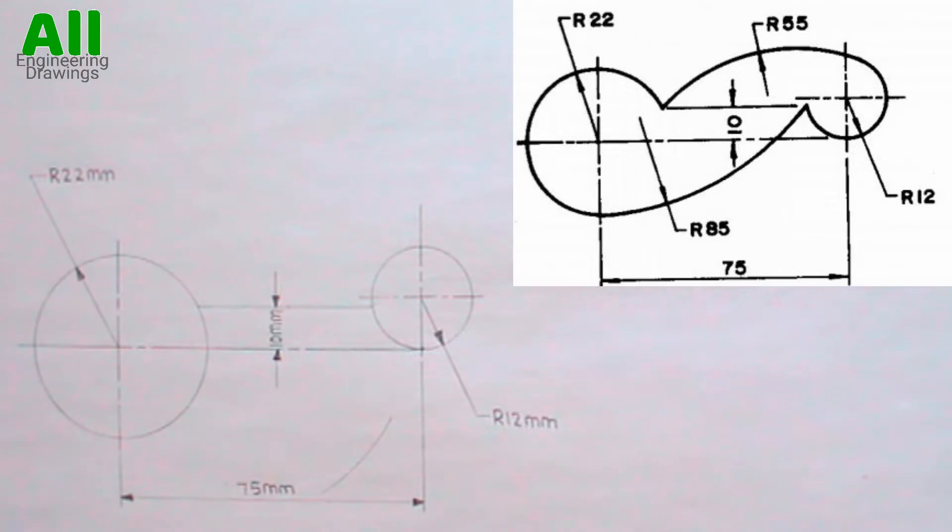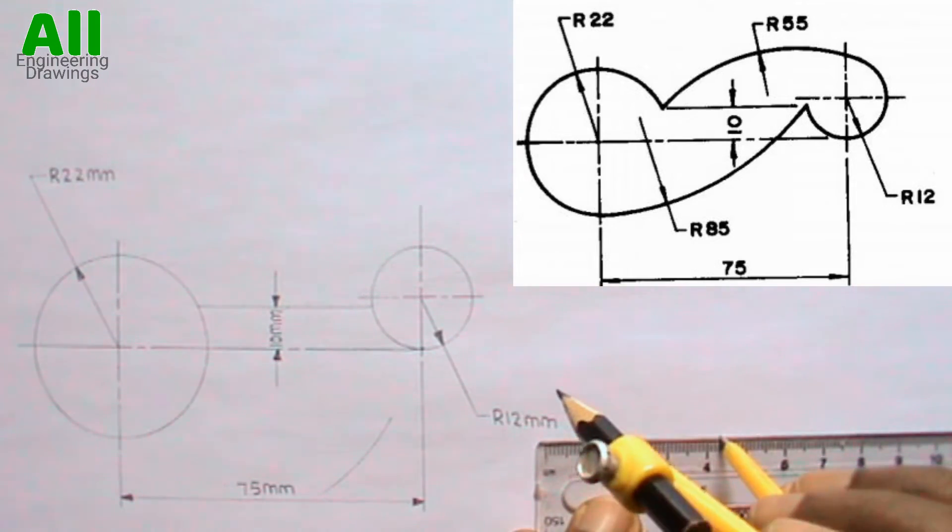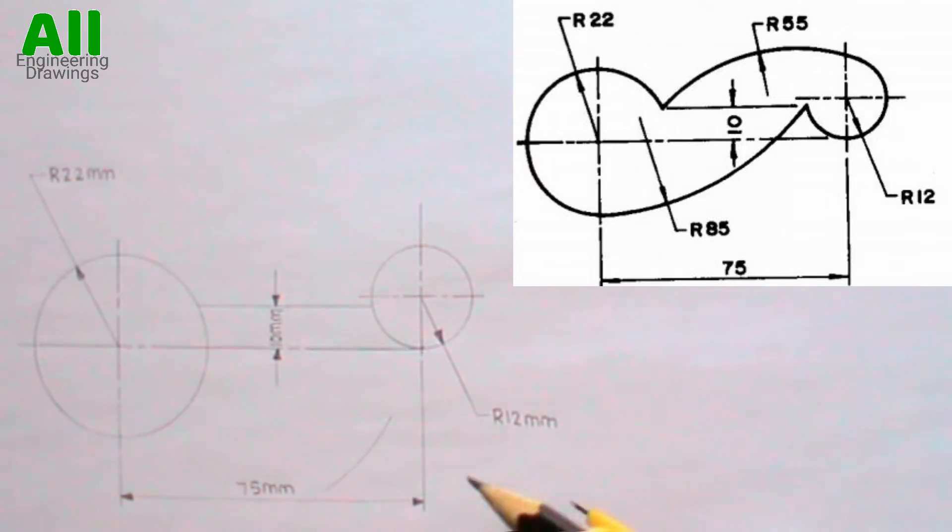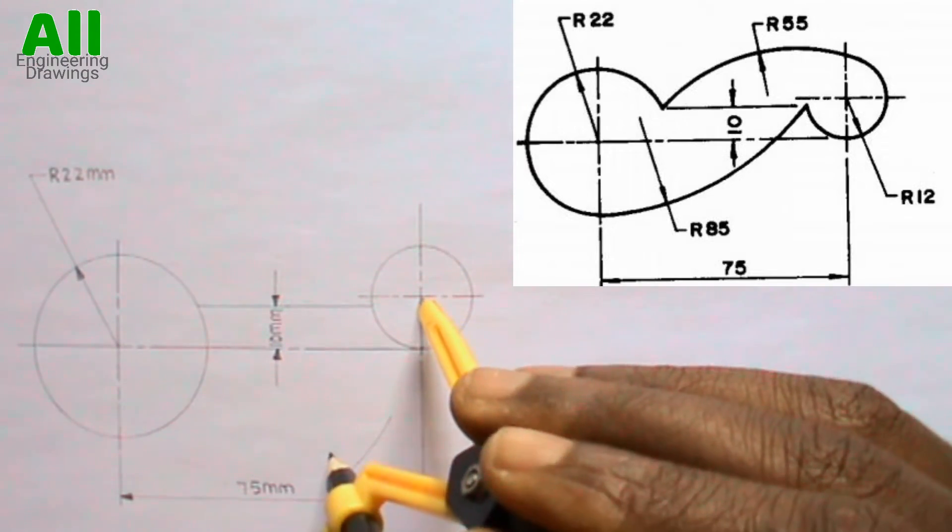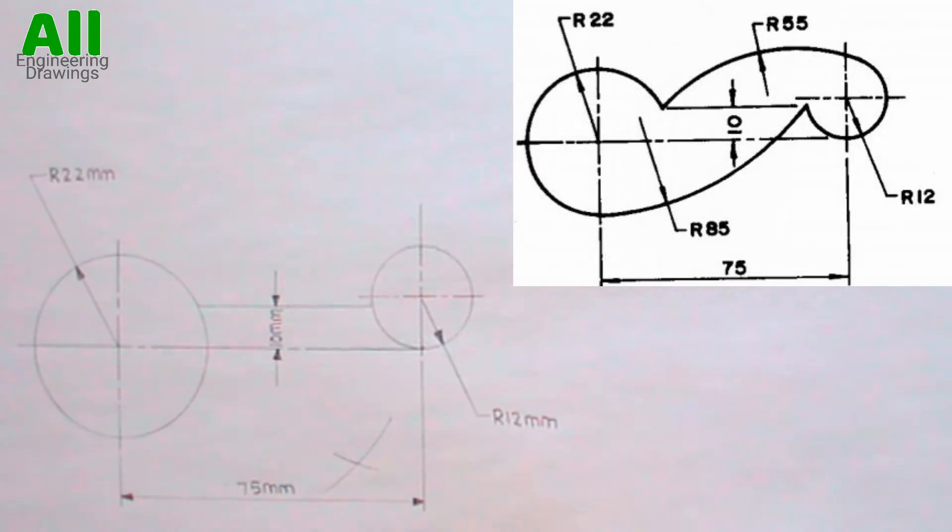After that, you have to extend your compass to a radius of 43mm. Then you have to place your compass at the center of this circle. Then cut an arc to intersect the previous arc you cut. I use radius 43mm because 55 minus 12 is equal to 43. Now place your compass at the point where the arcs intersect. Then produce the tangential arc with a radius of 55mm.